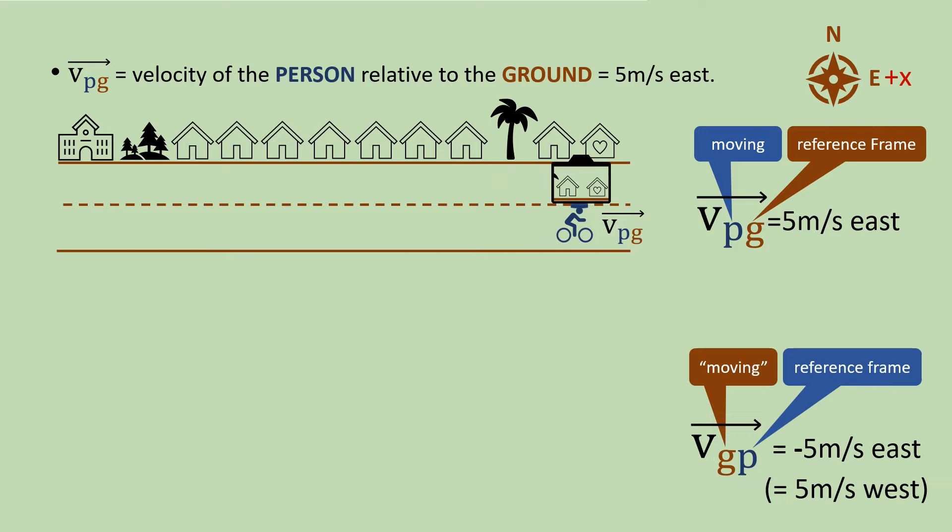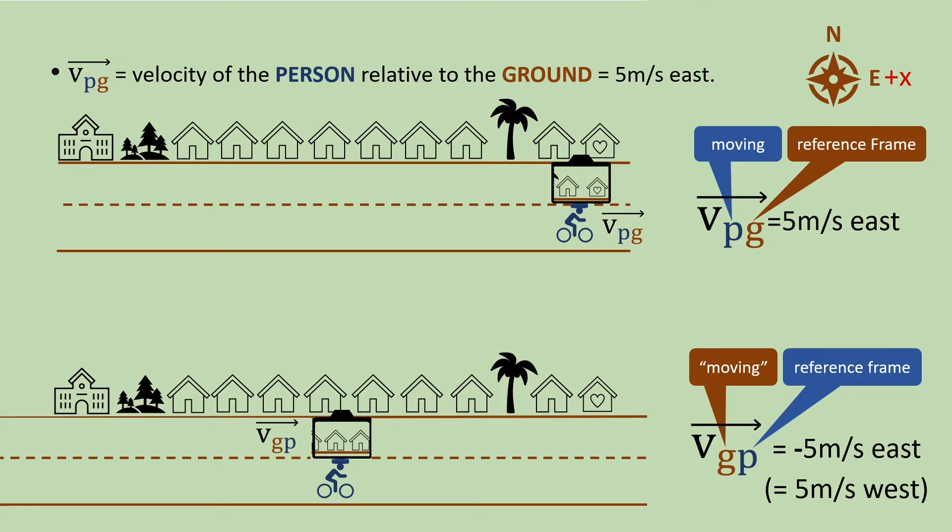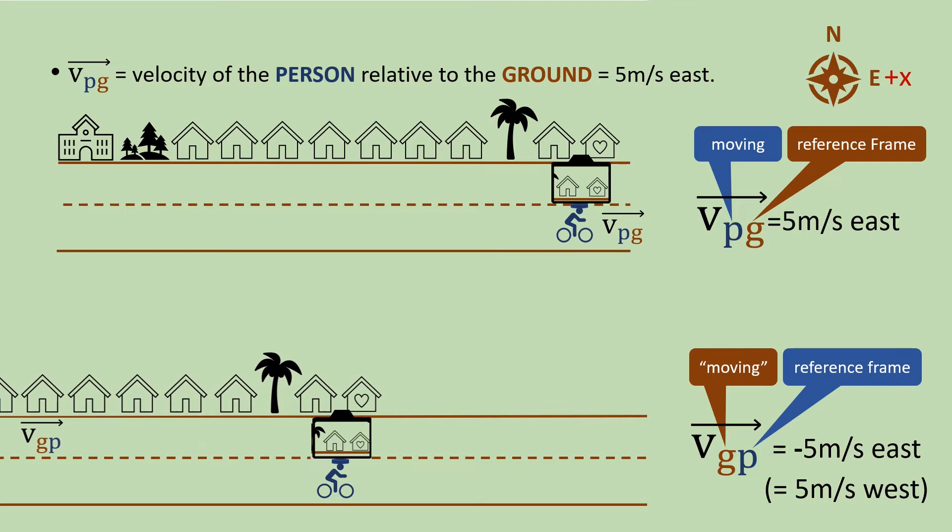But what if we made the reference frame the person? In that reference frame we would see what the camera recorded, because the camera is moving with the person in his reference frame. So we'd see the ground, and everything attached to it like the houses, moving backwards, thus at a speed of minus 5 metres per second east, or 5 metres per second west.